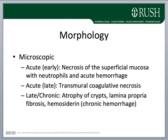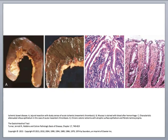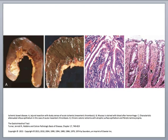Gross and microscopic photographs show the external surface of the bowel with a dusky dark gray-red appearance. When the bowel wall is opened, the mucosa appears diffusely brown-red, but interestingly the mucosal folds are typically preserved. Microscopically, changes of chronic ischemia show the superficial aspects of the crypts affected, fibrosis in the lamina propria — especially superficially — and brown hemosiderin deposited in the submucosa.